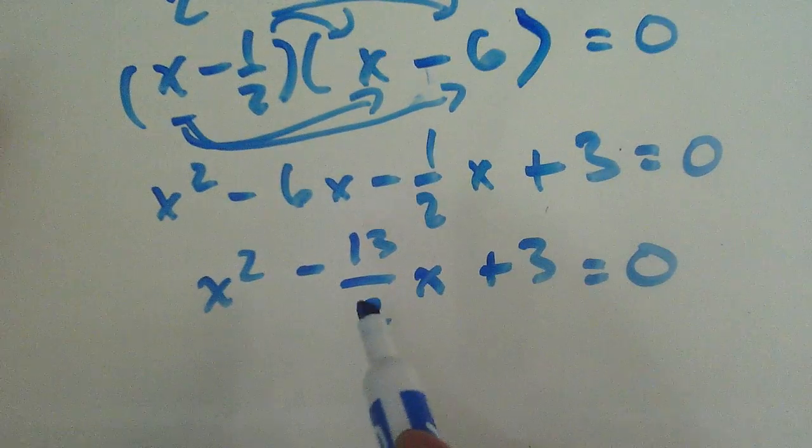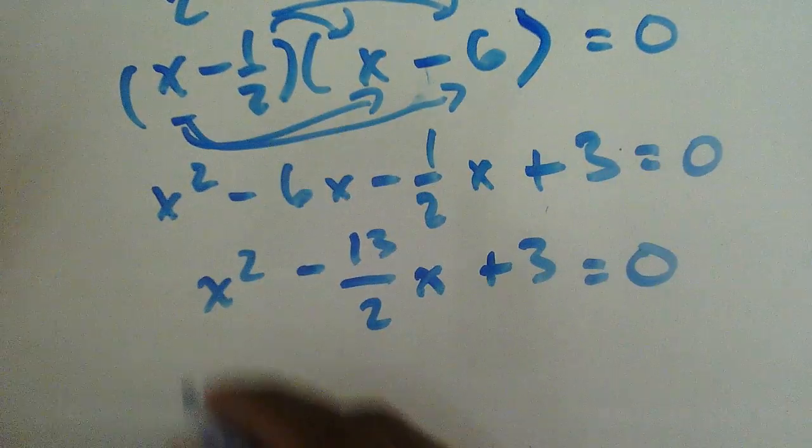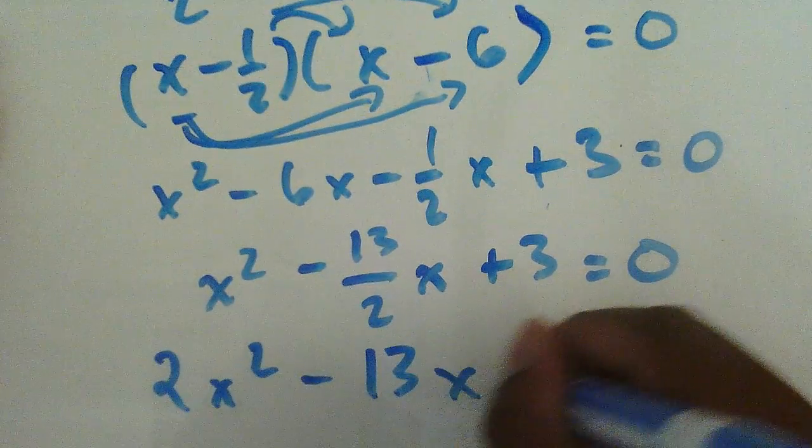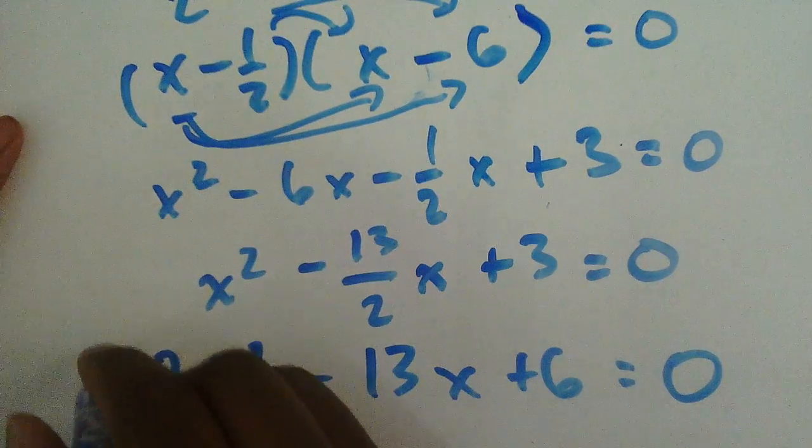So let's multiply two by everything to get rid of it. So it gives me two x squared minus 13x plus six equals zero. And that's the answer.